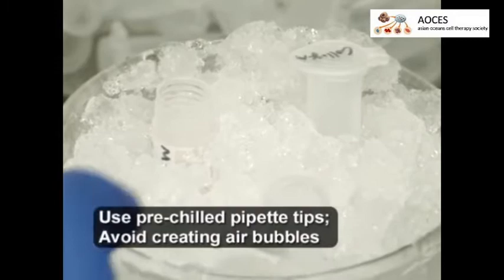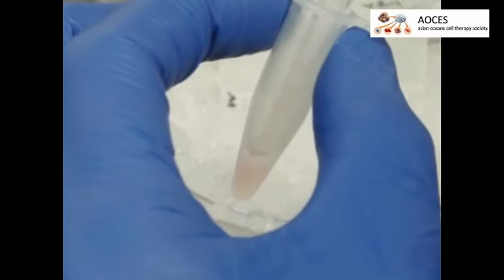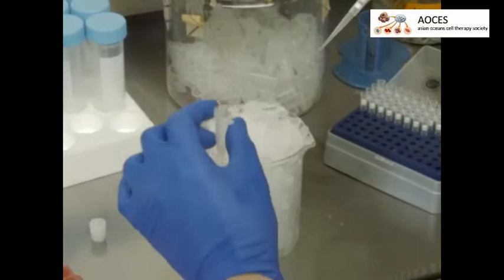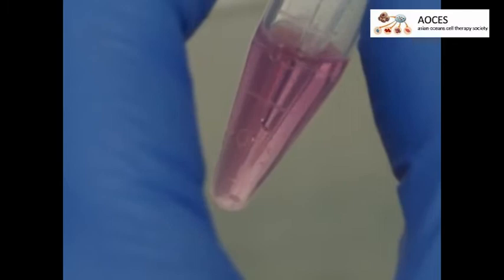Next, mix 100 microliters of the thawed basement membrane solution with 100 microliters of 2.3 mg per milliliter cold type 1 collagen solution in a pre-chilled 1.5 milliliter centrifuge tube. Incubate the extracellular matrix, or ECM, mixture on ice.